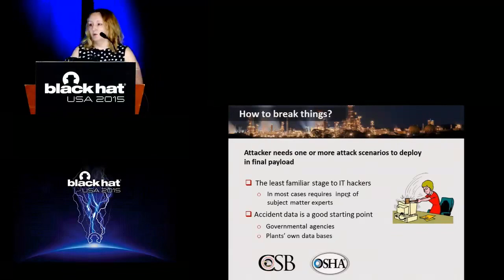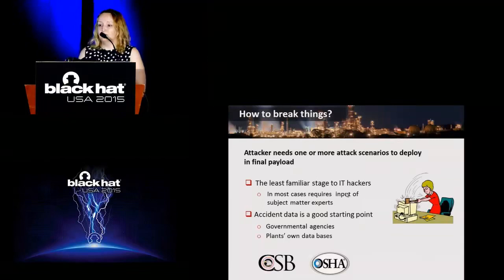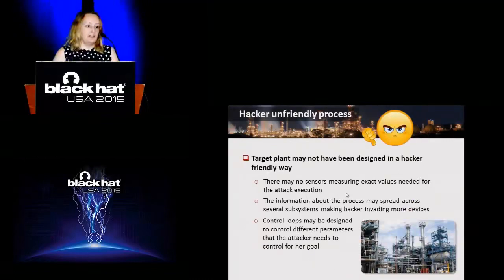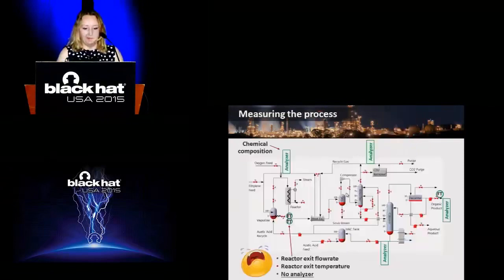Accident data is a good starting point. If things went wrong in the past in some ways, there is a good chance they will go wrong in the same way again. You can go into governmental agencies, accident reports, or plant's own accident databases and easily get inspired. The challenge here: the plant may not be designed in a hacker-friendly way. There might be no sensors which measure specific parameters of our interest. Information about the process may be spread over multiple sections, making the attacker invade more devices. Control loops might not be designed to control different parameters which the attacker needs to control. The attacker has to figure out all about that.